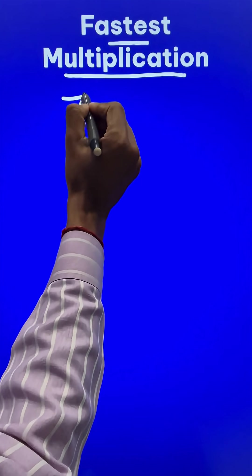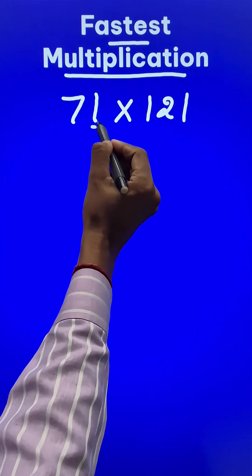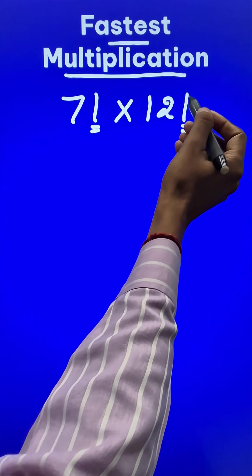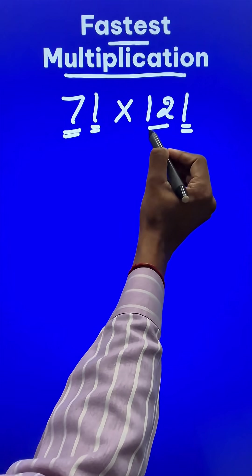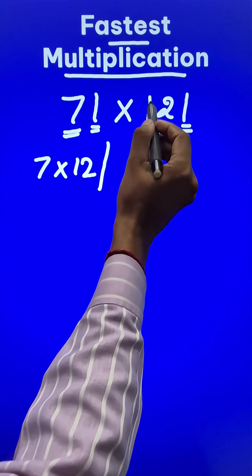Let us multiply 71 and 121. Now you can see here the two numbers end in the same number, that is 1. Whenever the numbers end in 1, you have to take the product of the remaining numbers, that is 7 times 12, and then add the remaining numbers.